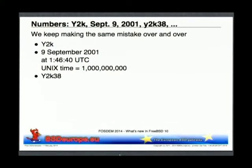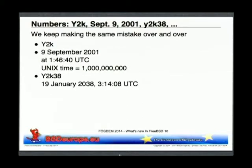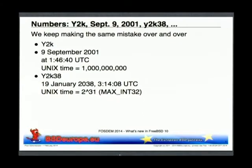Y2K38 — on the 19th of January 2038, 3:14:08 UTC, the Unix time will wrap around the 32-bit integer in which we store it currently. That's even more scary, because if you add one second exactly at this time, it becomes a negative value. Unix time is a signed int.